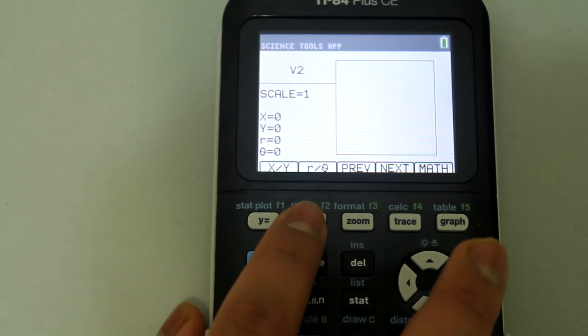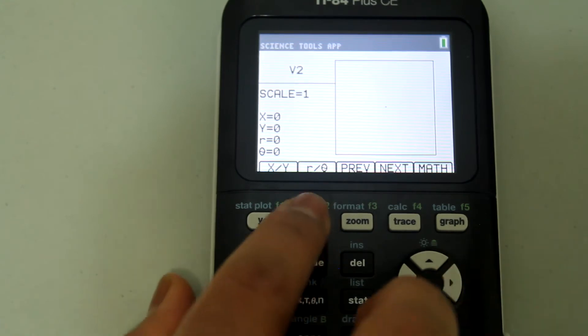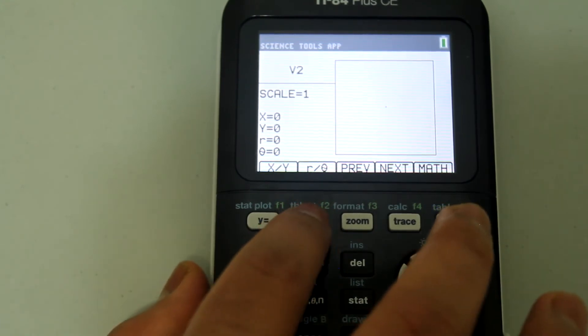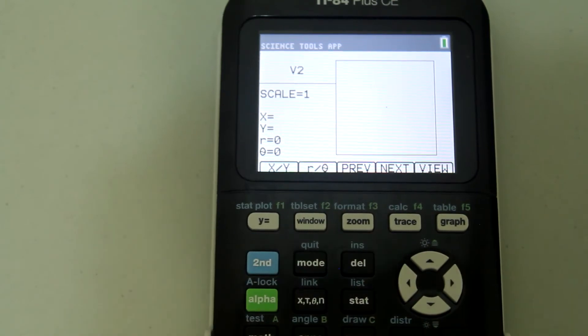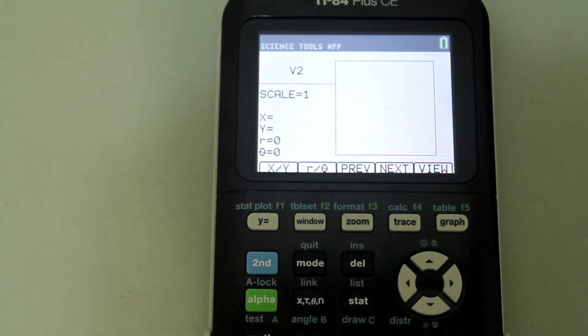This time let's do it with r slash theta. Press the button that says windows and now the cursor is flashing next to the r. Let's say our r is 15 and arrow down and let's say the theta is 60 degrees and then enter.